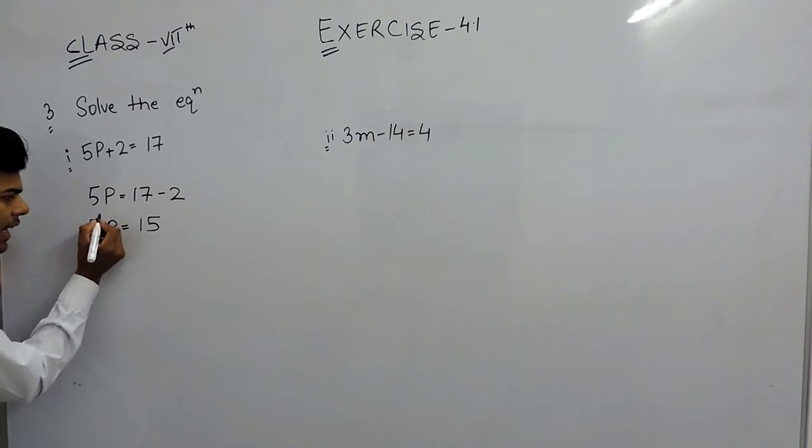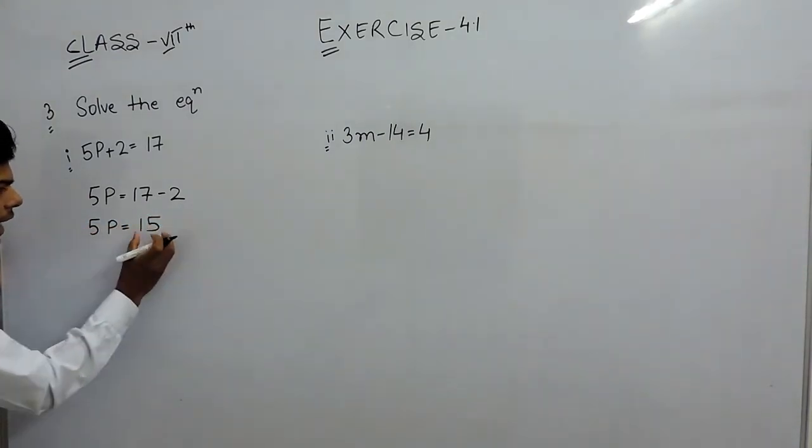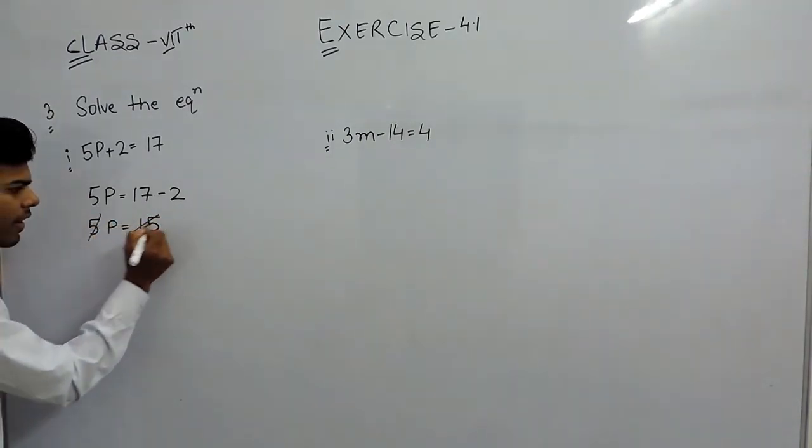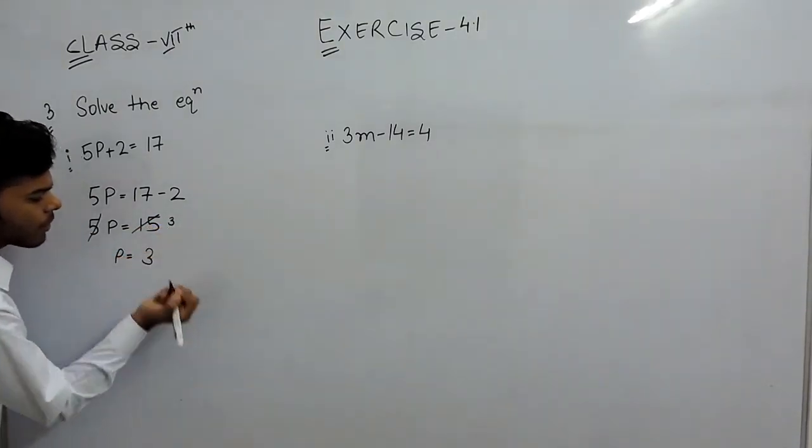Now we can directly cancel out the left hand side and the right hand side. So it is 5, 3 times, so p equals 3.